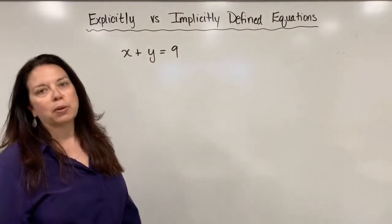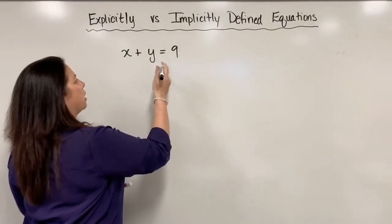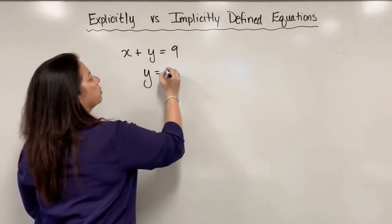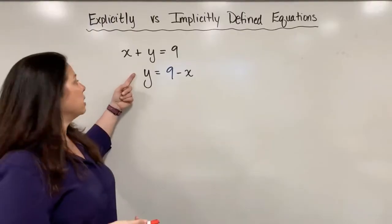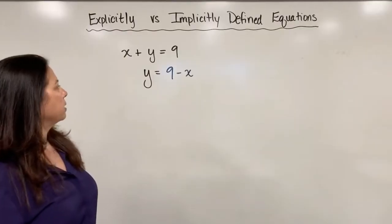So let's say we want to solve for y. To do so, I just need to subtract over the x, and we get the equation y equals nine minus x. So y is explicitly solved and is equal to nine minus x.